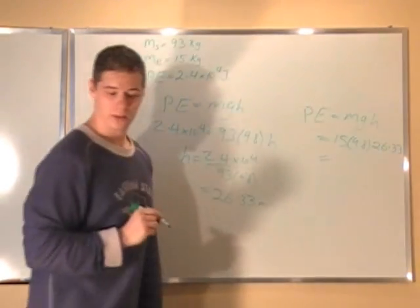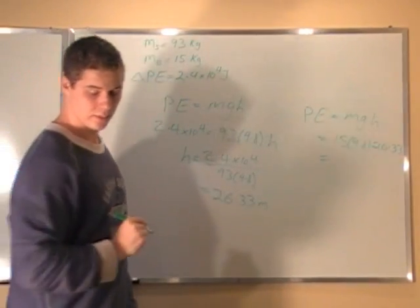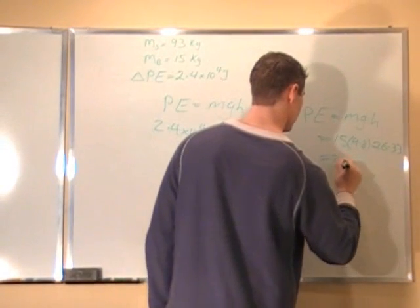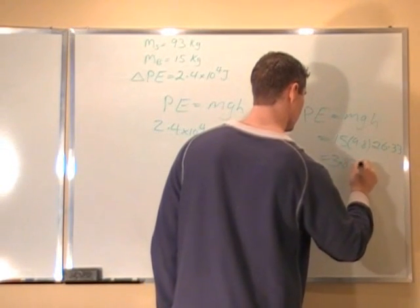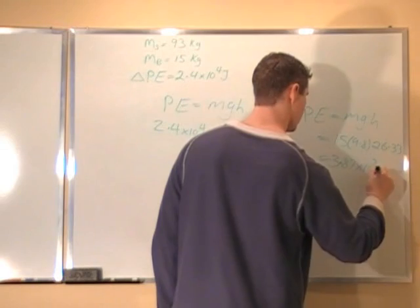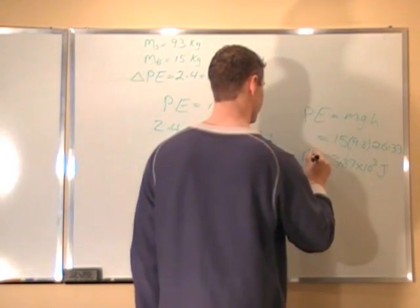Multiplying that all together gives us an answer of 3.87 times 10 to the 3 joules. That's how it goes.